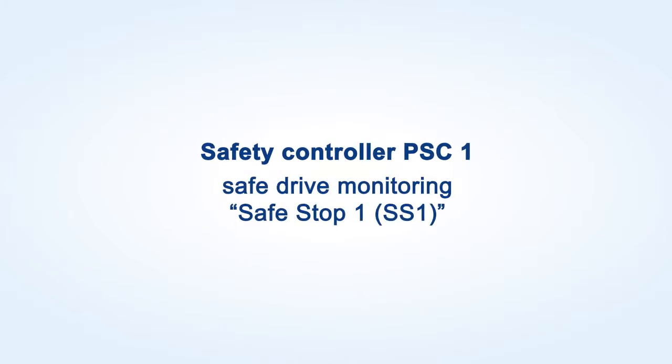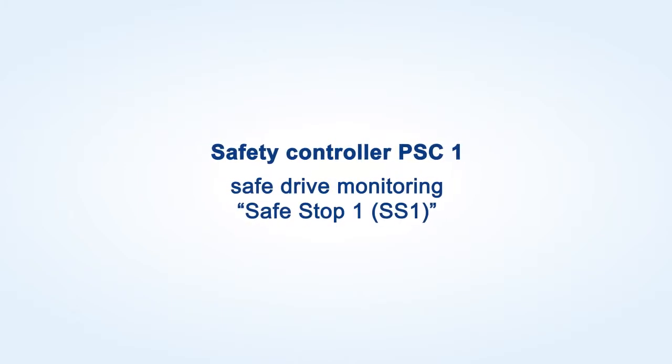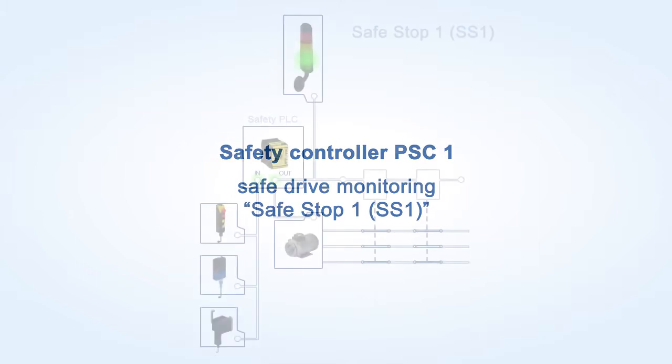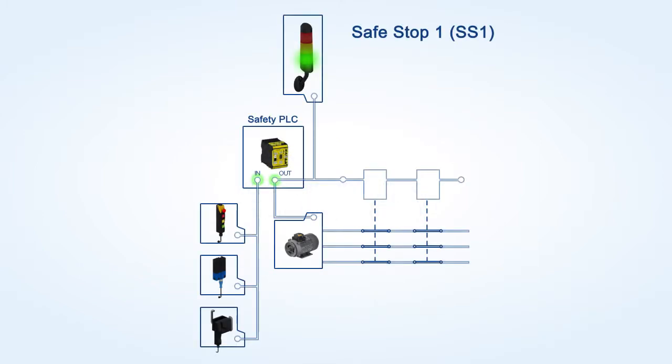Safety Controller PSC1 Safe Drive Monitoring Safe Stop 1. With the safety function Safe Stop 1, the movement of the motor is controlled delayed. This can be triggered, for example, by the opening of a safety door. After a pre-set period of time, the energy supplied to the motor is cut. Here are two examples as to how this can be done.